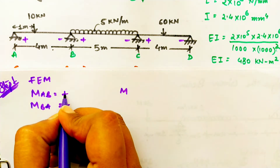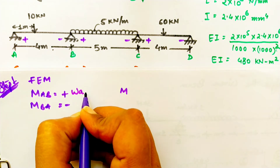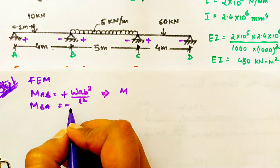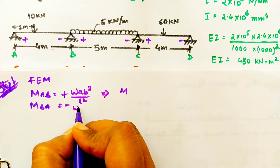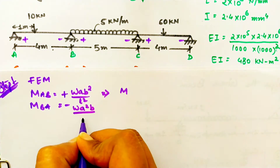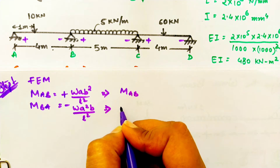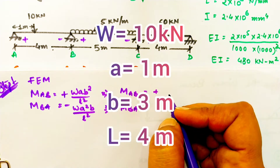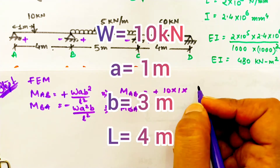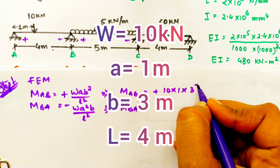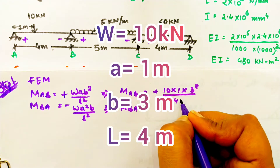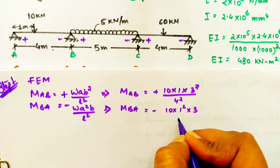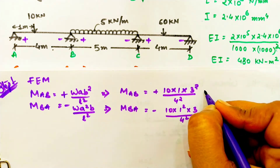We should know the different formulas for fixed end moments for different loadings. For a single load that is not symmetrical we use the AB formula: WAB²/L² and WA²B/L², where A = 1, B = 3, and L = 4. Left side is positive and right side is negative. Do not forget to write the units and the positive/negative signs.